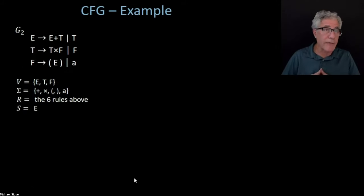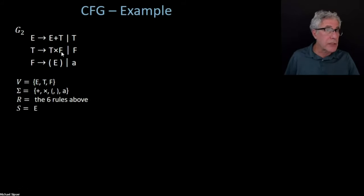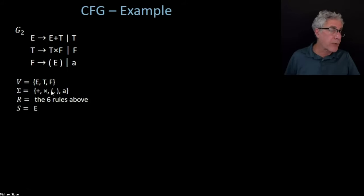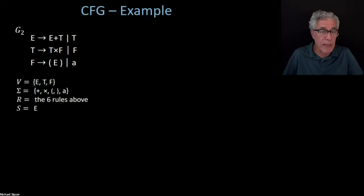Let's do another interesting example of a context-free grammar—one that can generate arithmetical expressions involving pluses and times. It has six rules: E goes to E plus T or T; T goes to T times F or F; and F goes to parenthesis E parenthesis or A. The variables are E, T, and F. The terminal symbols—the symbols of the language you're generating—are plus, times, parentheses, and A, which represents the operand. The start variable, which normally appears in the upper left of the grammar, is E.